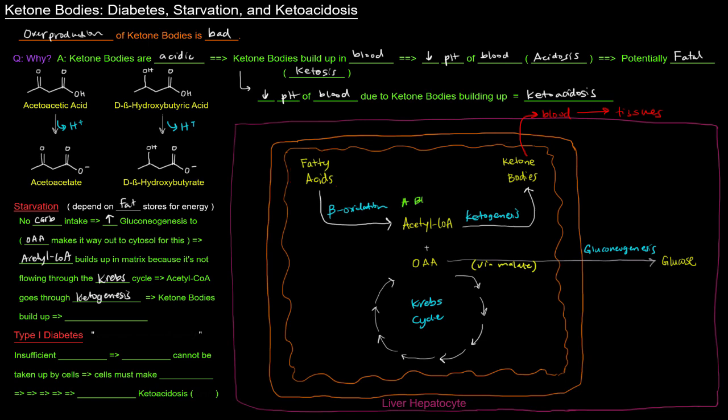But during starvation, this is going to happen to a great extent because the body is depending on these fatty acids. So it's going to be producing a bunch of acetyl-CoA. And I should emphasize this. A bunch of acetyl-CoA. So if we have a lot of acetyl-CoA, we're going to have a lot of ketone bodies. A bunch of this, a bunch of those. So if we have a bunch of those, basically we're supplying ketone bodies to these tissues, to these extra hepatic tissues.